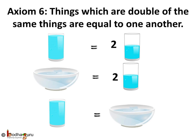This means the amount of water in both glass and the bowl is same, as both are double the amount of water in the half-filled glass. And this is what Euclid's axiom says.